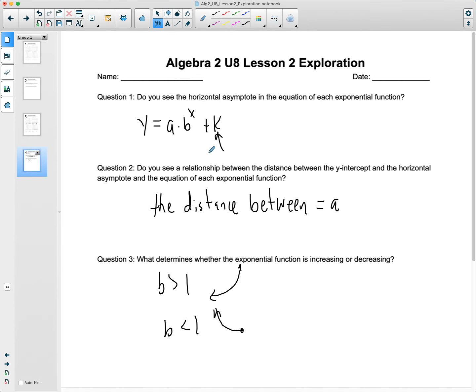And so if I go back to the summary sheet, right, so we should see that the k value out here, that tells us where that horizontal asymptote is going to be, alright? The distance between the y-intercept and the horizontal asymptote, that's equal to a.